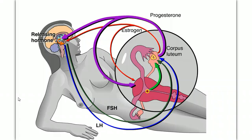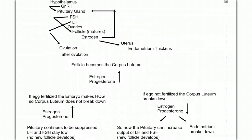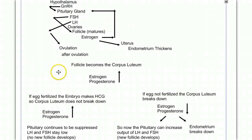Human reproduction is complicated. It depends on precise coordination of the ovaries and uterus in response to hormonal signals orchestrated by the brain. At this point, you should be able to take all these terms and write in paragraph form what's happening in the human menstrual cycle.